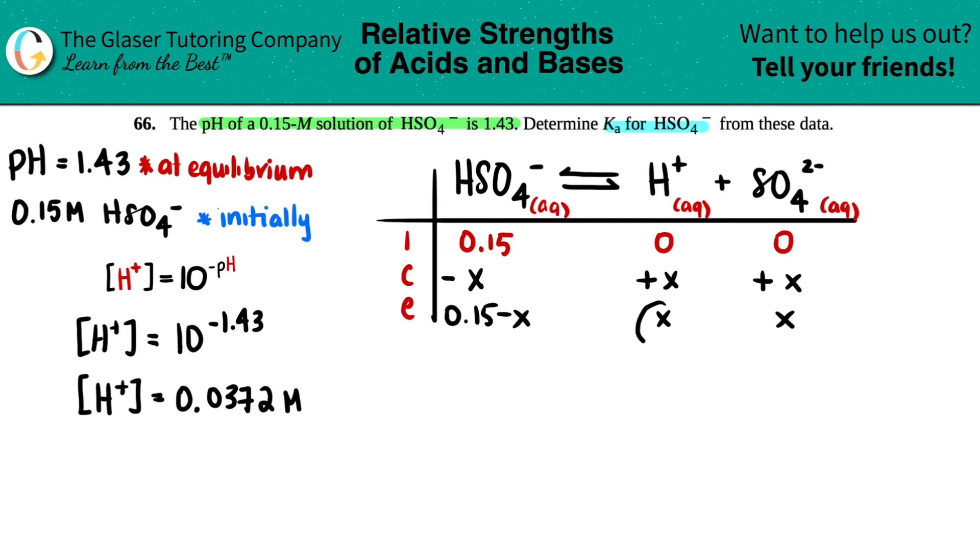That's what X was. If this is what the molarity of H+ is, 0.0372, and these are both X values, this would be the same amount. Now we know what this would be. 0.15 minus X, X was 0.0372. So now I just have to do 0.15 minus 0.0372. I get 0.1128. Now I have all of my equilibrium concentrations.